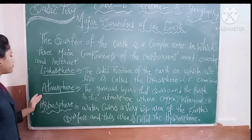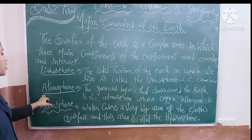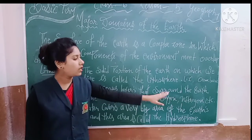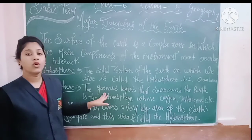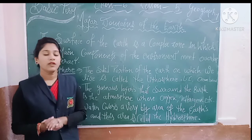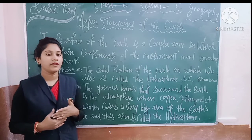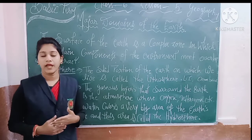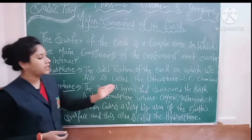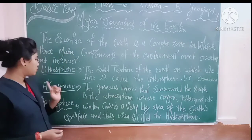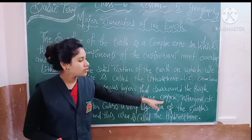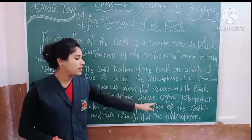Now let's talk about our atmosphere. So what is the atmosphere? The gaseous layer that surrounds the earth is the atmosphere. Every gas is very valuable for us, and each gas is very important. The atmosphere contains gases like oxygen, nitrogen, and carbon dioxide.